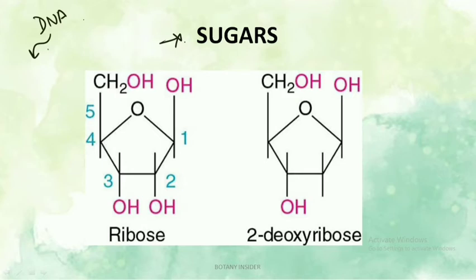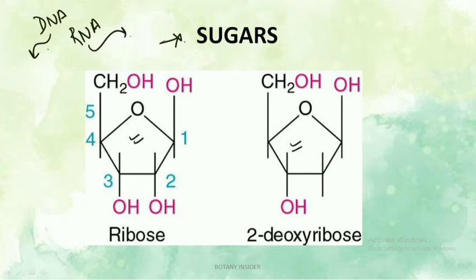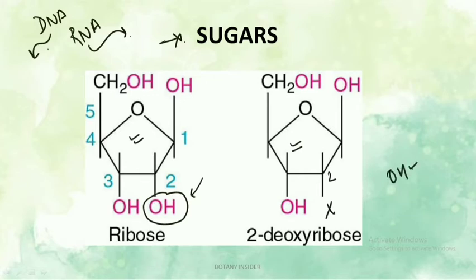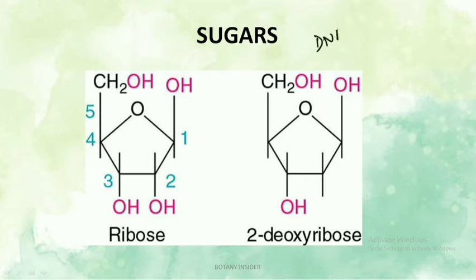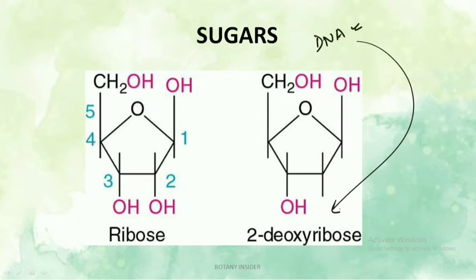DNA contains deoxyribose sugar and RNA contains ribose sugar. Ribose is a 5-carbon (pentose) sugar, and so is deoxyribose. The only difference is that ribose has an additional OH group at the second carbon, whereas in deoxyribose the OH is absent at the second position. This is what makes DNA more stable in alkaline conditions — because of the absence of that OH group. Remember this, as questions have been framed from this point.